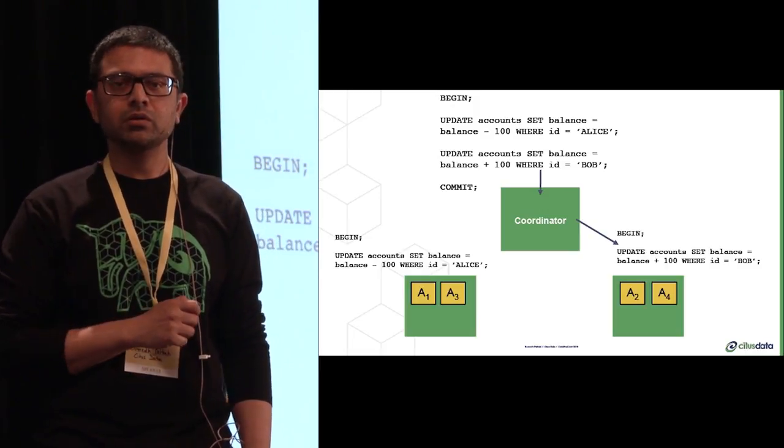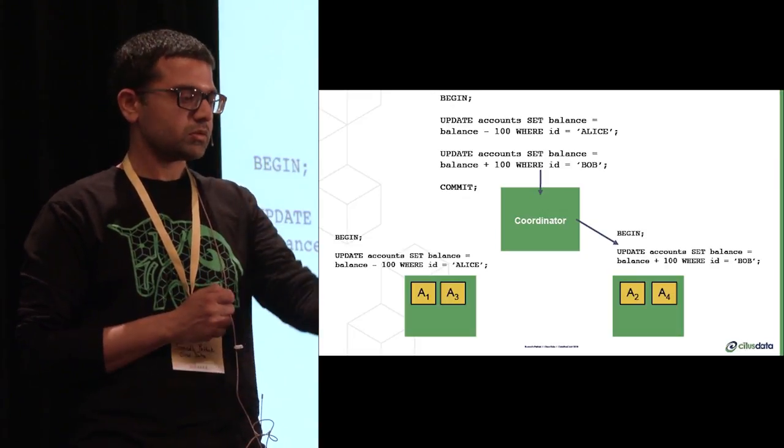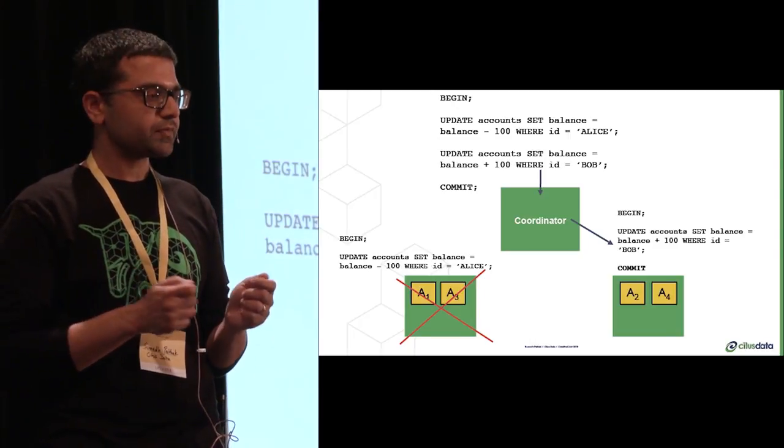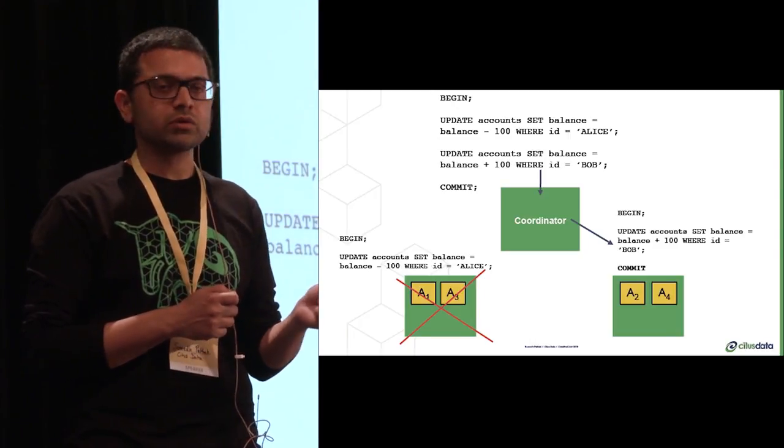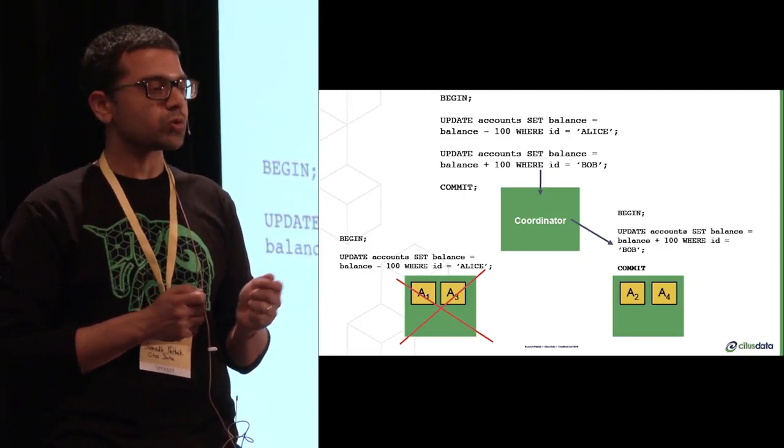So let's keep that transaction open and issue a second one for Bob's account. Now we update Bob with that account. So now can we commit? Well, not yet, because even though we have an open transaction on both nodes, node one might have crashed at this point. So we would have committed on node two, but then we would have lost the transaction on node one.